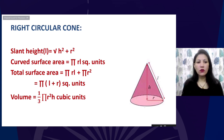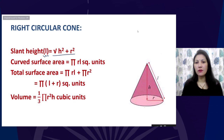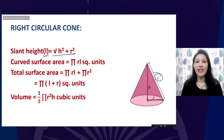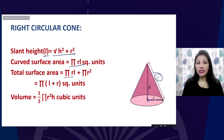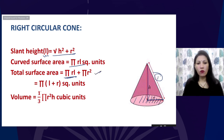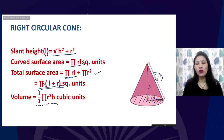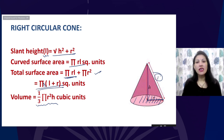For a right circular cone, the slant height l = √(h² + r²), where h is the height and r is the radius of the base. The curved surface area is πrl, and the total surface area is πr² + πrl. The volume of a cone is one-third of the volume of a cylinder, that is (1/3)πr²h.